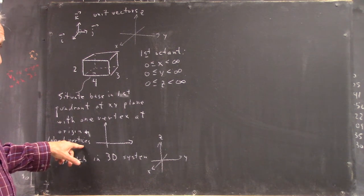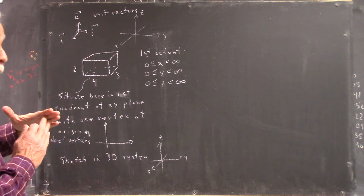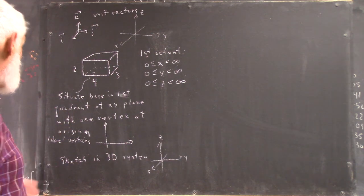You know what I mean by vertex. Vertex is where two lines come together. Two or more lines.